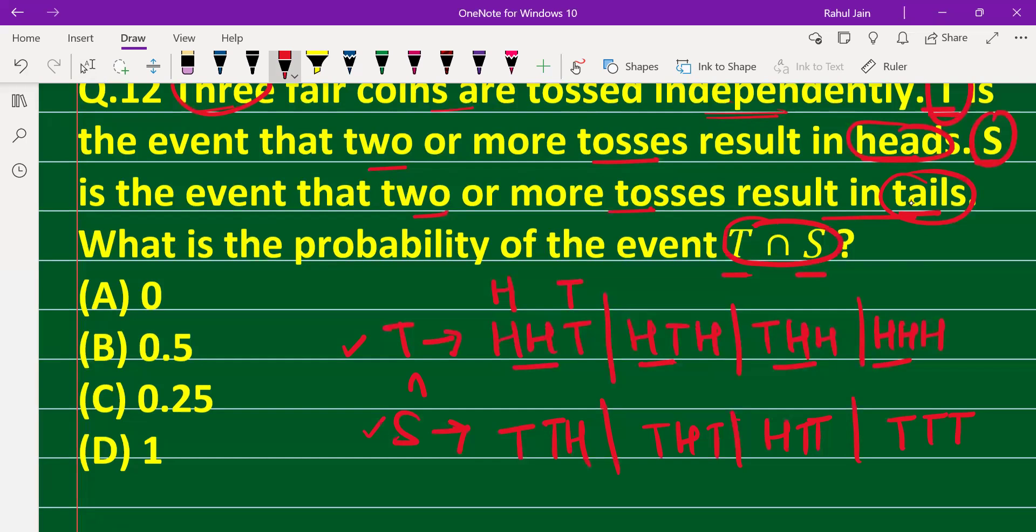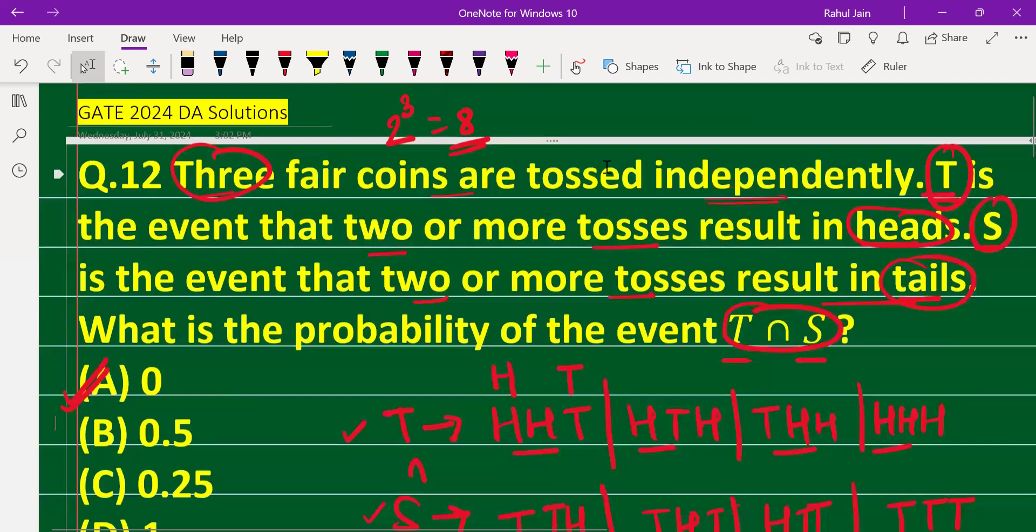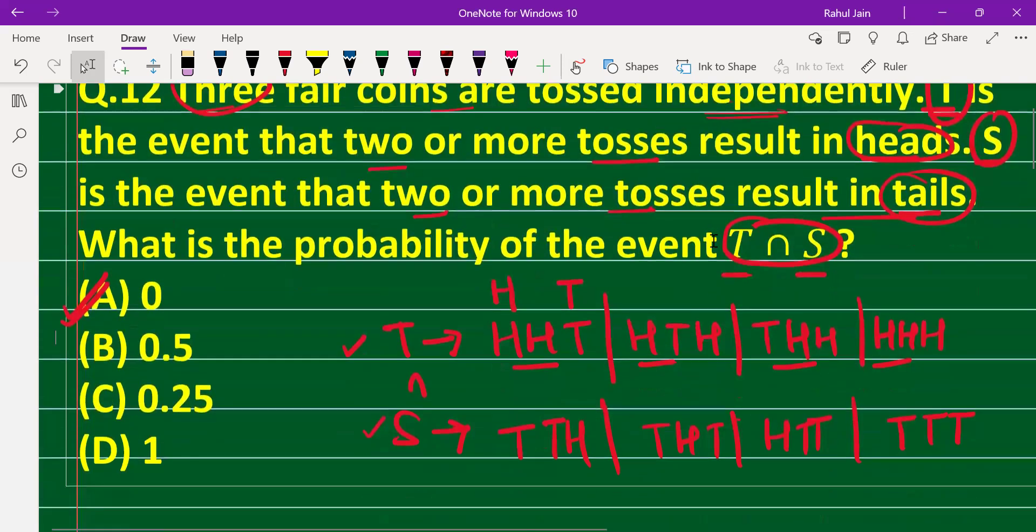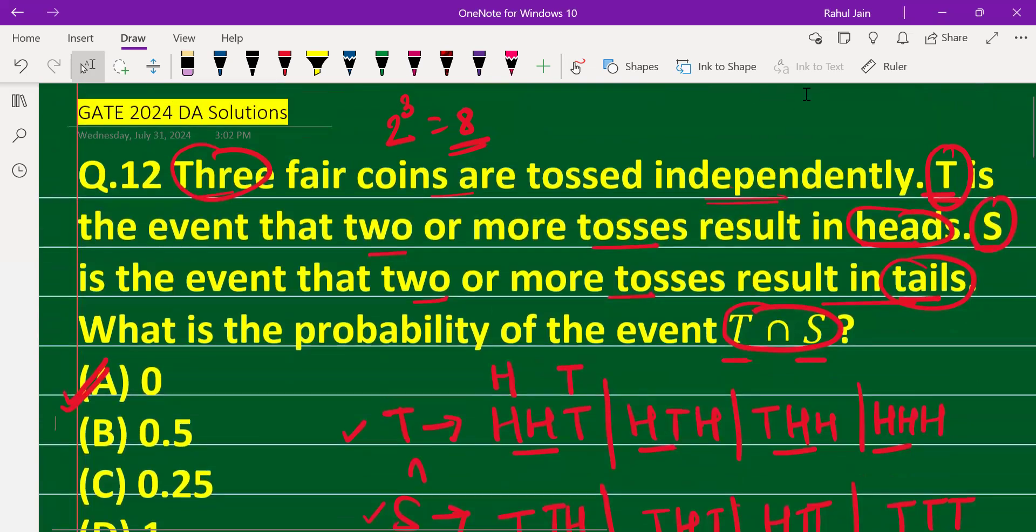Thus, option A is the correct answer for this probability question. This was asked in GATE 2024. I hope the solution is very easy.